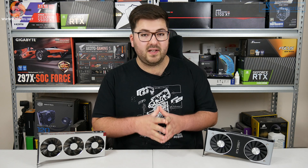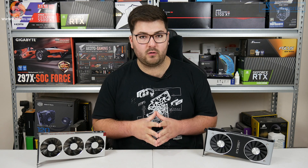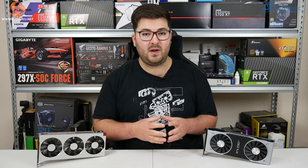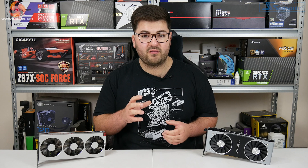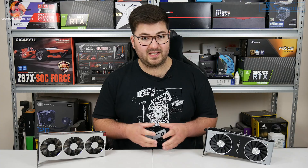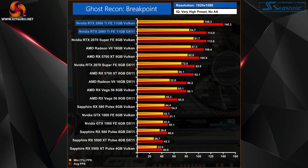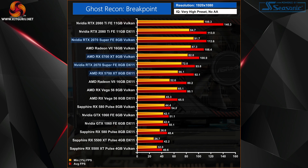Diving into performance starting at 1080p, we have all GPUs in one graph with two entries per GPU — one for DX11 and one for Vulkan. Starting at the top, the RTX 2080 Ti benefits hugely from using Vulkan: its average frame rate increased by 24% just by changing the API, while its one percent lows came up by 28%. It's much the same for the RTX 2070 Super, with a 20% increase in average frame rates with Vulkan and a 27% increase to its one percent lows. These high-end Nvidia cards clearly see significant gains by switching to Vulkan at 1080p.